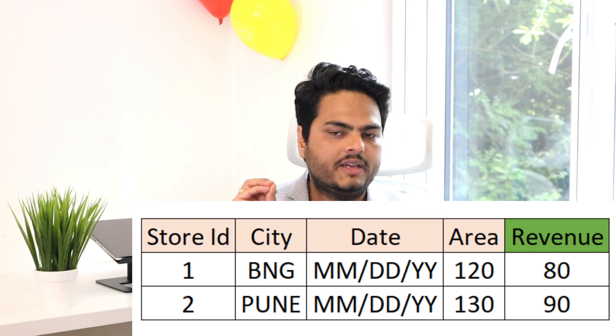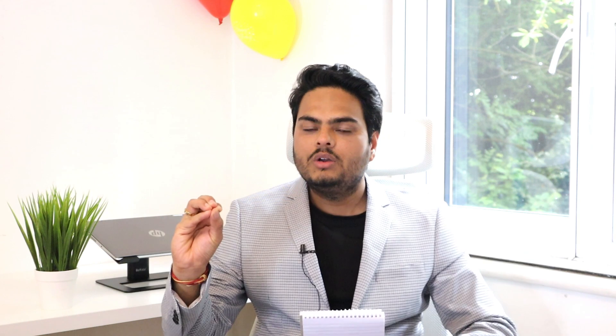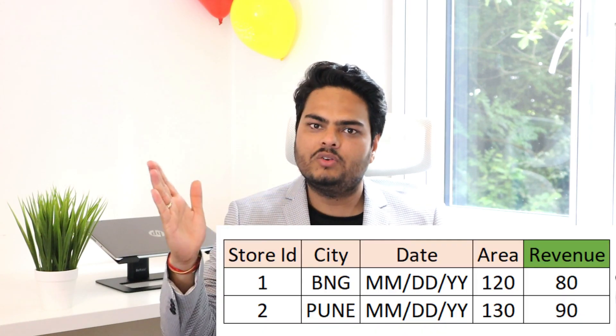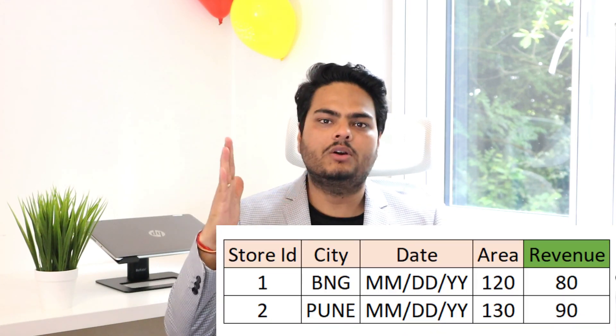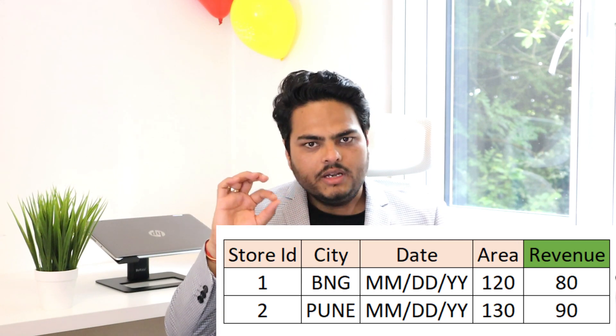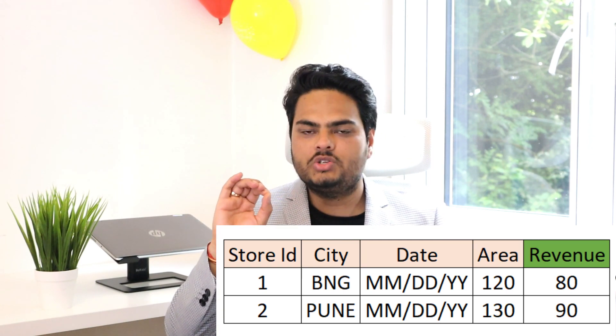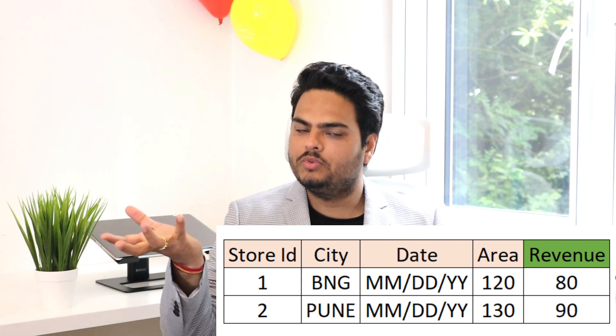Now let me ask you: at the moment you see this data with these five columns, what are the things that come to your mind on first look? One is you will clean the data by doing missing value treatment or outlier treatment — those will apply on the area and revenue columns. Then immediately it will come to your mind: I will remove the store ID, because that is an ID and not useful for learning.